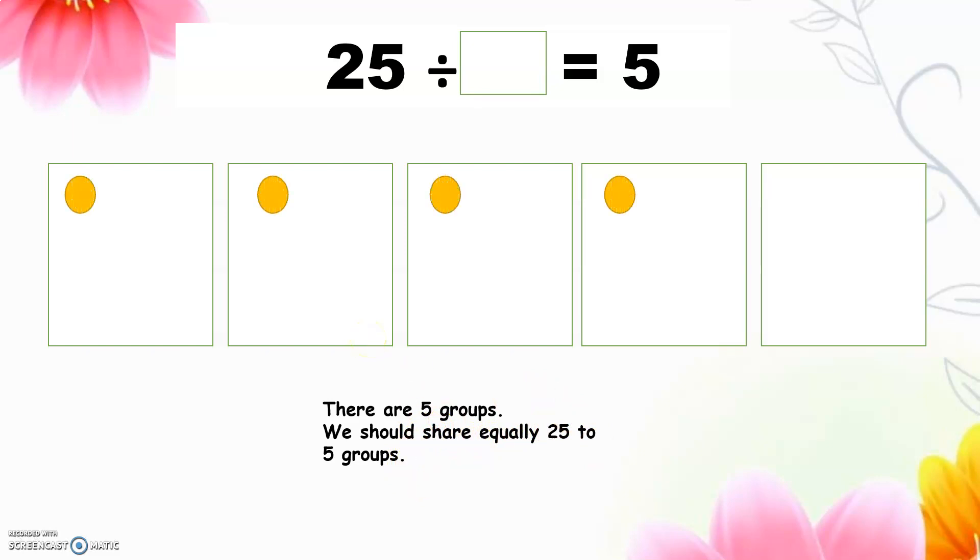3, 4, 5, 6, 7, 8, 9, 10, 11, 12, 13, 14, 15, 16, 17, 18, 19, 20, 21, 22, 23, 24, 25. So how many objects in each group? 5. The answer will be 5.